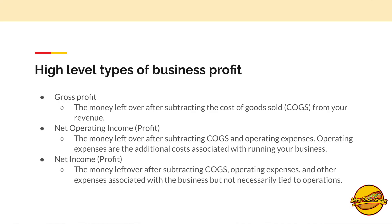The types of business profit. At a high level, we have gross profit — that is the money left over after subtracting the cost of goods sold from your revenue. Cost of goods sold is commonly referred to as COGS. Then there's net operating income, which is the money left over after subtracting COGS and operating expenses. Operating expenses are the additional costs associated with running your business — not necessarily costs that go into producing a product, but associated and necessary expenses to operate.